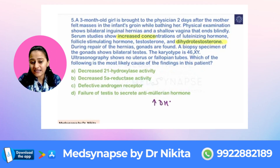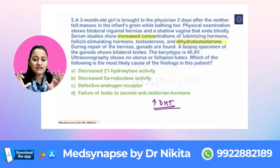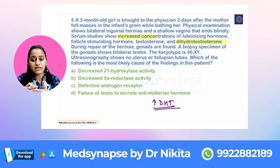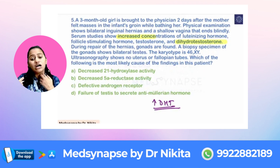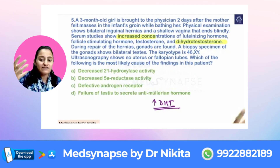There is increased dihydrotestosterone. Remember that in a male, the active form of testosterone is dihydrotestosterone, and that is what is required for the development of the external genitalia. So if dihydrotestosterone is not able to act, it will lead to female external genitalia even if there is a testis in a male.